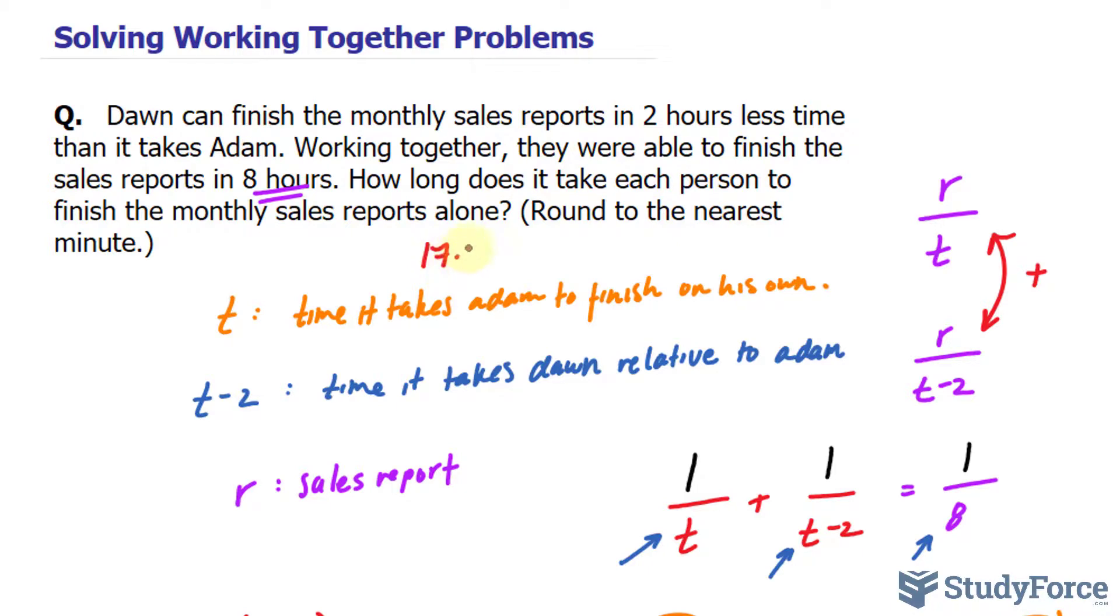With that said, Adam takes 17.06 hours, and I know that I have to switch 0.06 into minutes, and I will do that in a moment, while it's 17.06 minus two for Dawn.